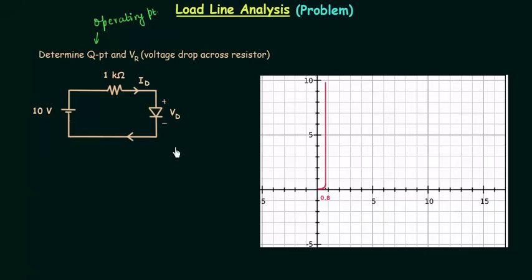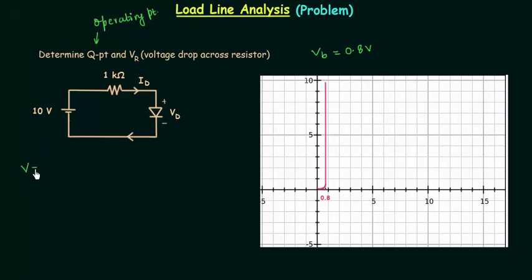This is the given circuit and these are the given characteristics. Looking at the characteristics, 0.8V is the barrier potential, so Vb is equal to 0.8V. In this circuit, 10V is the external voltage source, so V is equal to 10V, and 1kΩ is the value of load resistance, so RL is equal to 1kΩ.